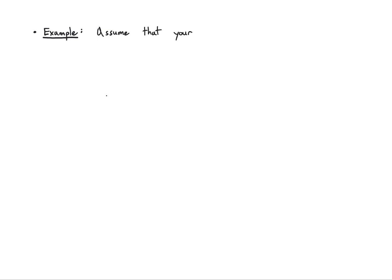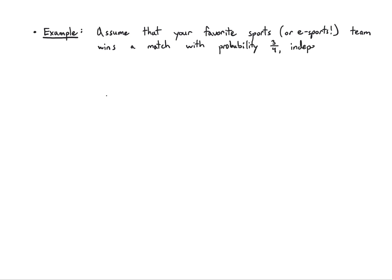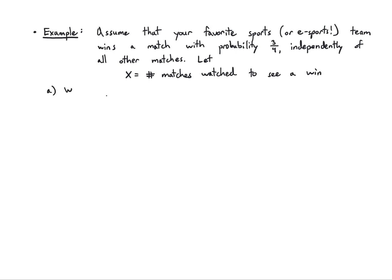Let's do an example. Say you're trying to watch a few games played by your favorite esports team. They win a match with probability 3/4, independently of every other match. You want to keep watching until you see your team win once. Let X be the number of matches you watch in order to see a win. The first question: what kind of random variable is X? This is the number of trials to see the first success, so that's Geometric(3/4).